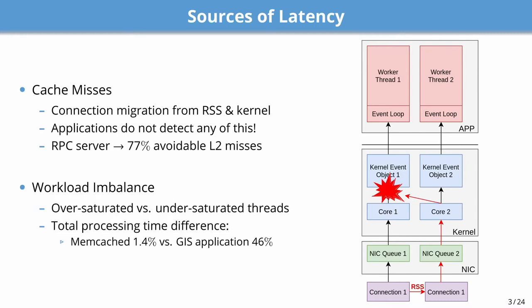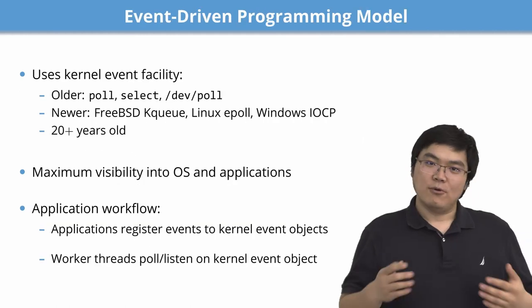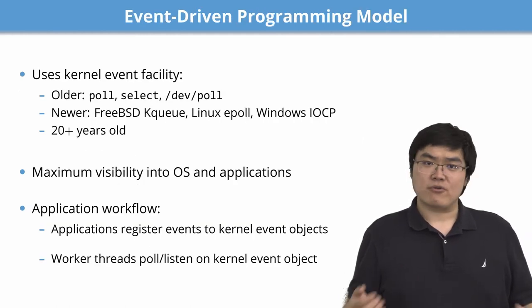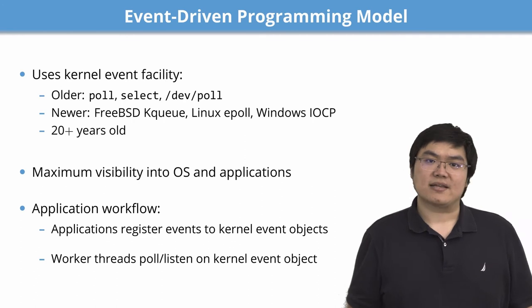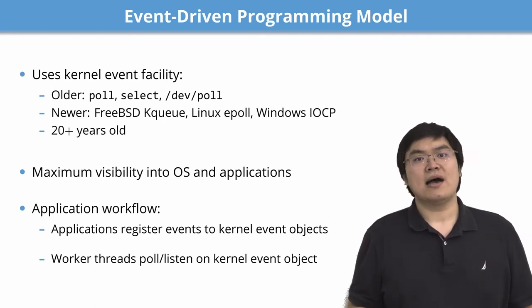The second source of latency is workload imbalance. Workload imbalance causes some threads to be oversaturated and others to be undersaturated. We benchmarked the total processing time difference between the most and the least busy threads in two applications. In memcached, which is a uniform application, the difference is 1.4%, whereas in a GIS application with a Zipf request service time distribution, the difference is 46%. Most server applications we studied use event-driven programming, which relies on the underlying kernel's event facility. On older systems, this would be poll and select; on newer systems, we have kqueue and Linux ePoll.